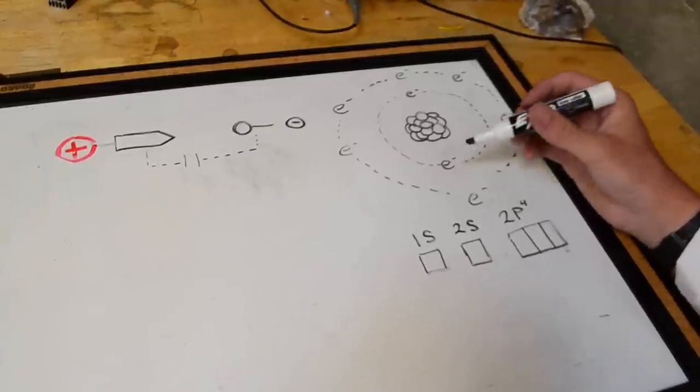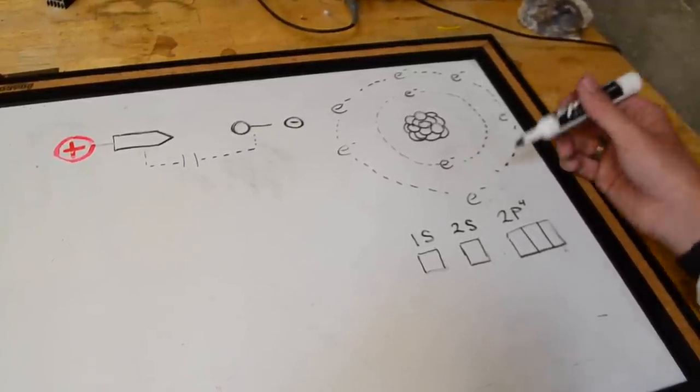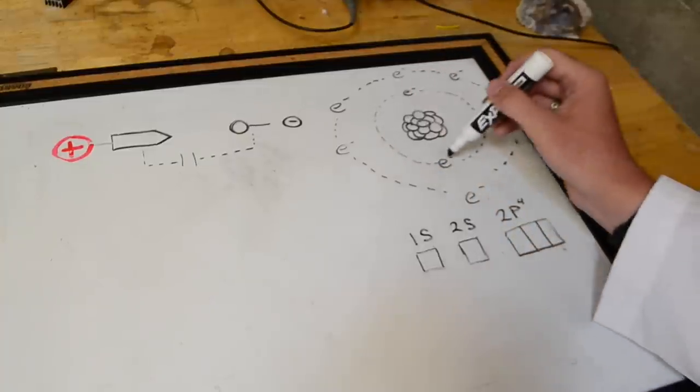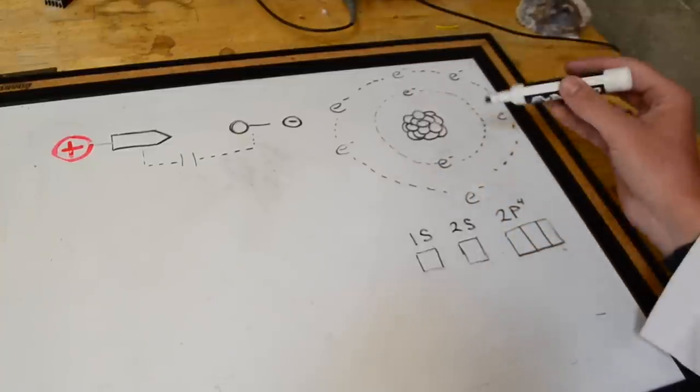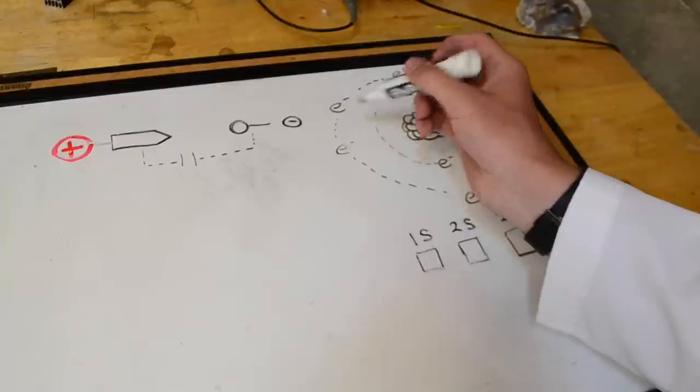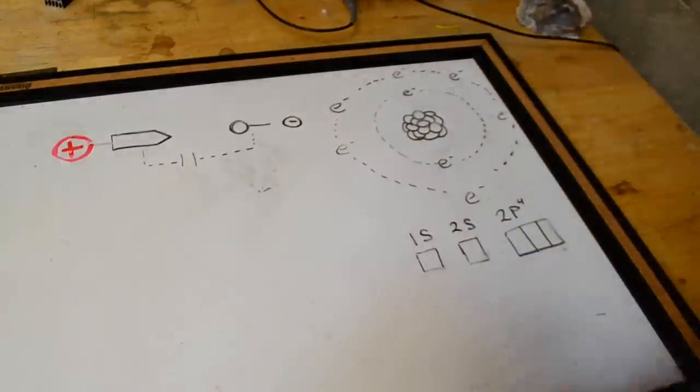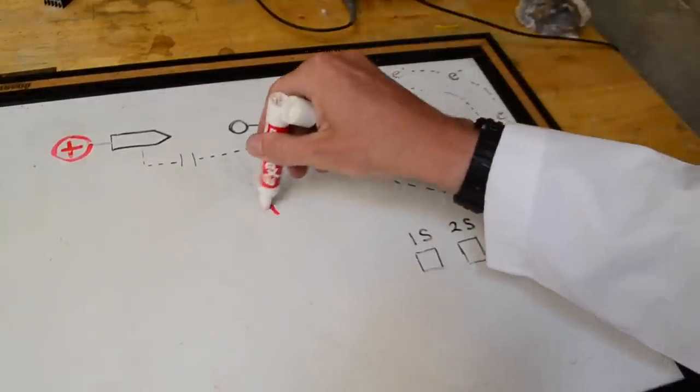Before we talk about how ion propulsion actually works, we should probably talk about what an ion is, in case you don't know. An ion is just an element with a different number of electrons from the amount of protons inside it. So if it has more electrons than protons, it's going to have a net negative charge. And if it has less electrons than protons, it's going to have a net positive charge.